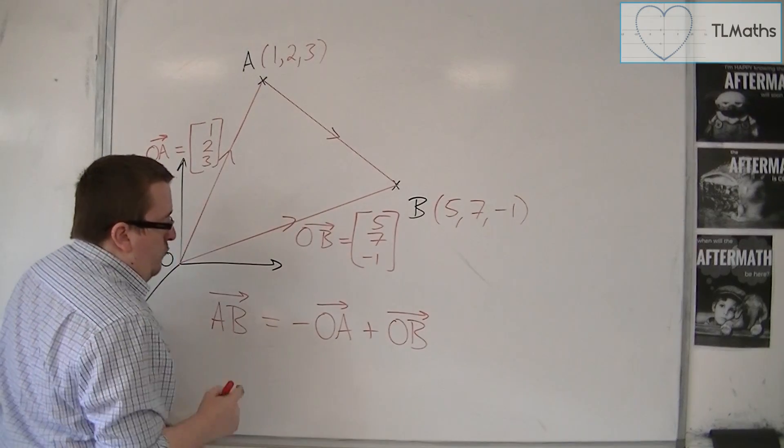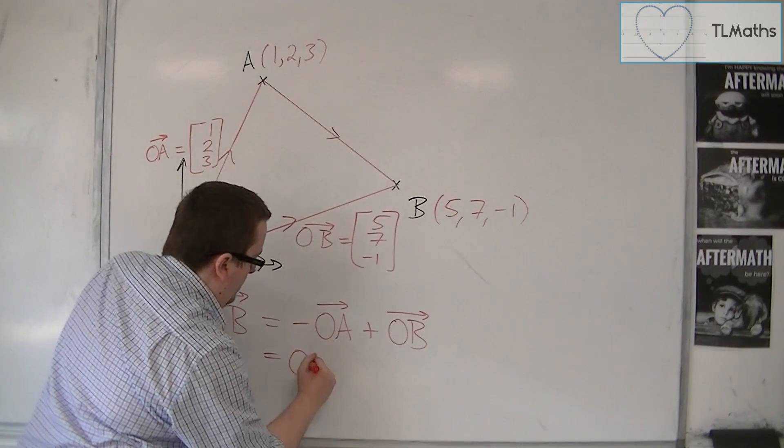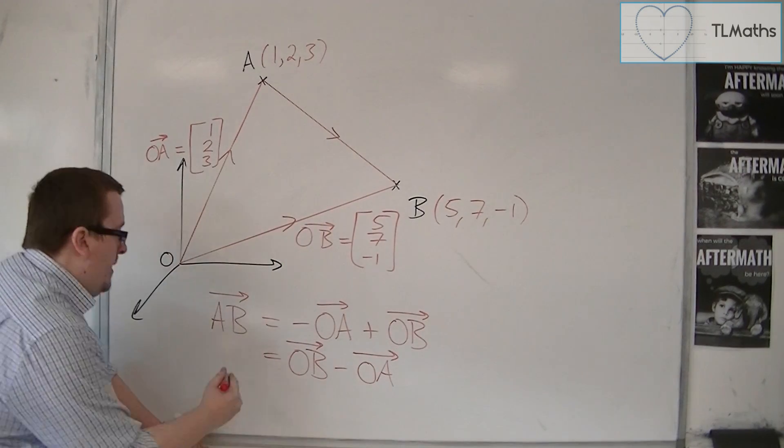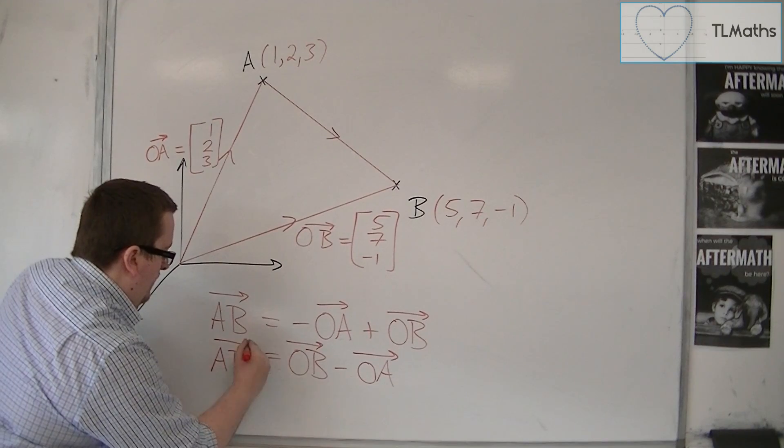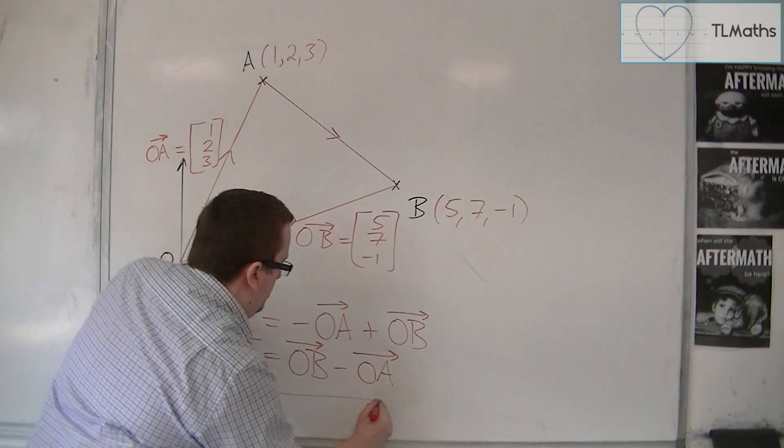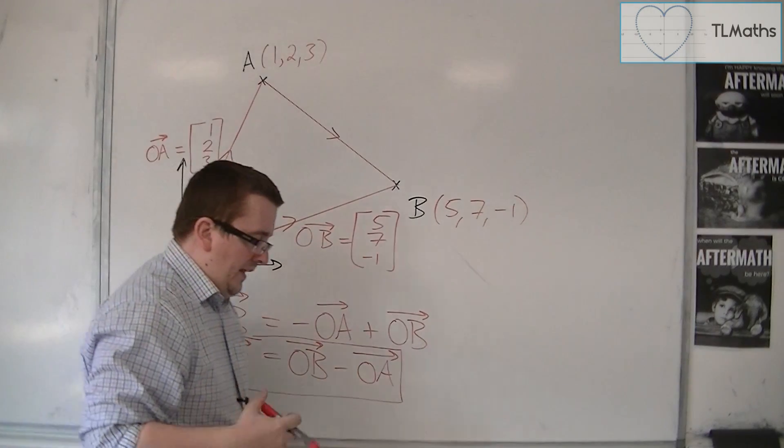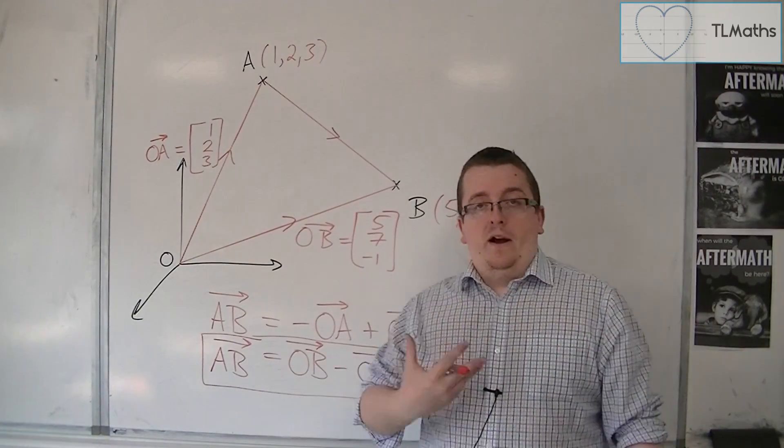So if I rewrite that, rather than the other way, AB is equal to OB minus OA. So in other words, A to B is B minus A.